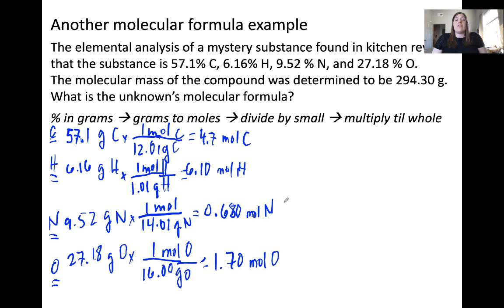The next step is divide by small. You'll notice here that the nitrogen value in moles is the smallest number. So I'm going to divide everything by 0.680. When I do that, I get 7 moles of carbon. I got, actually when I calculated this value for hydrogen, I got 8.97. Now 8.97 essentially rounds to 9. It's quite close, within 0.03 of 9. So we're going to count that as essentially equal to 9 moles of hydrogen. When I calculated for nitrogen, obviously dividing by the smallest with the same value gives us a value of 1. And for oxygen, I got 2.5.